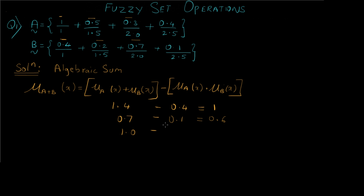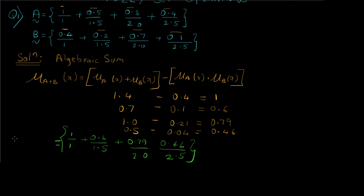For the third value, 0.7 × 0.3 = 0.21, so the final answer is 1.0 − 0.21 = 0.79. For the last case, 0.4 + 0.1 = 0.5, minus their multiplication 0.4 × 0.1 = 0.04, which gives 0.46. That is the final answer for algebraic sum.